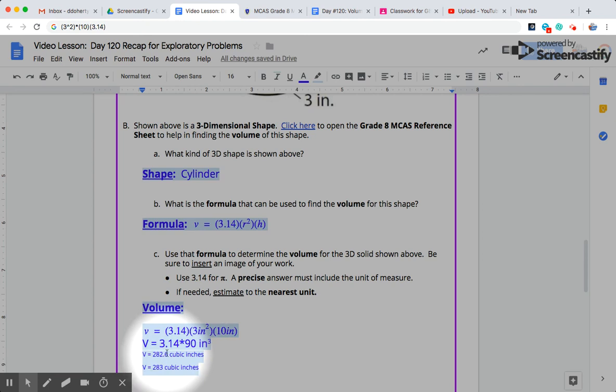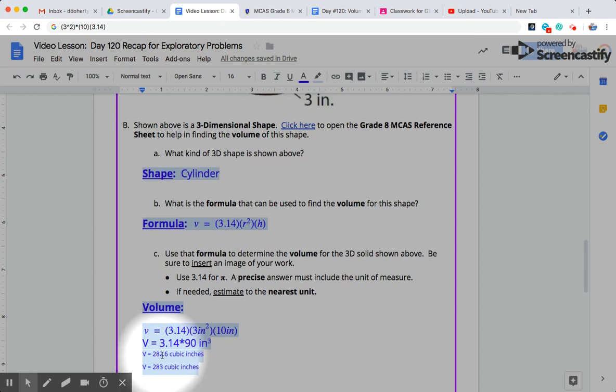Nearest unit is the nearest whole number. And anything 5 or higher tells us we need to round up to 283 because it's a little closer to 283 than it is to 282.